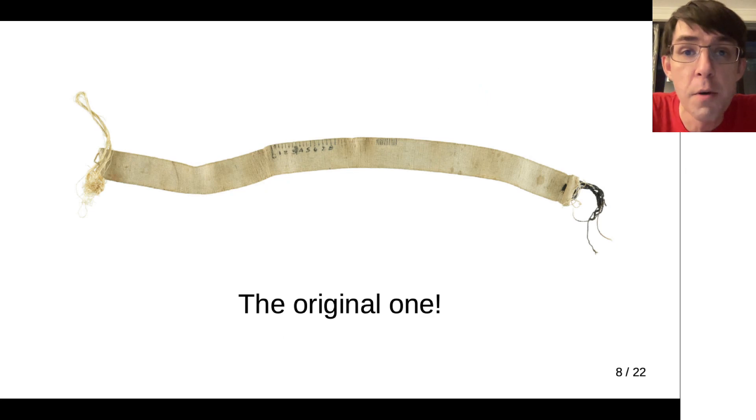This is a picture of the original variable scale which Joe Gerber made out of the elastic in his pajama pants. He invented this while he was a student at RIT. He created it to help him solve homework problems.